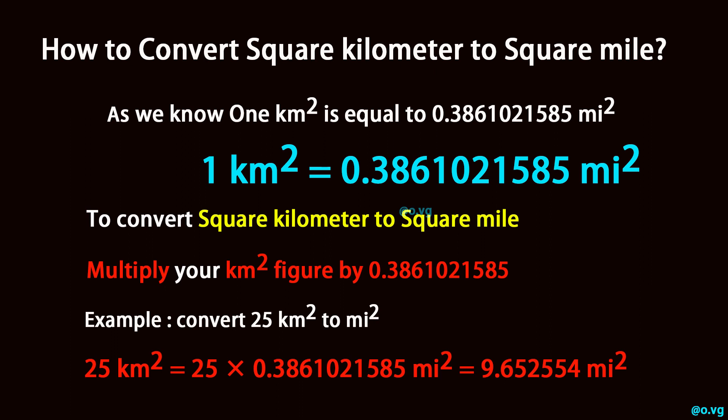Example: convert 25 square kilometers to square miles. 25 square kilometers is equal to 25 times 0.3861021585 square mile, which equals 9.652554 square miles.